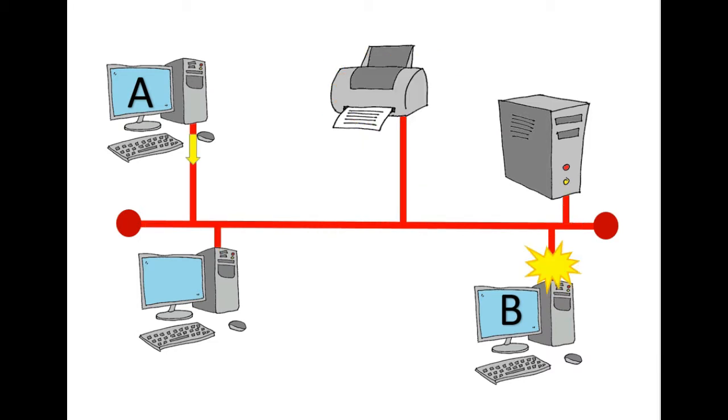If there's a break in the cable between the bus and computer B, then no message could get through to computer B.